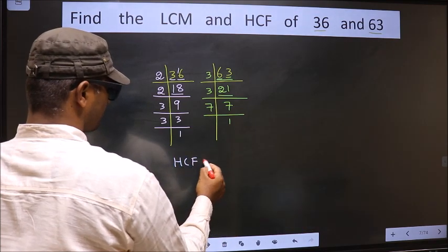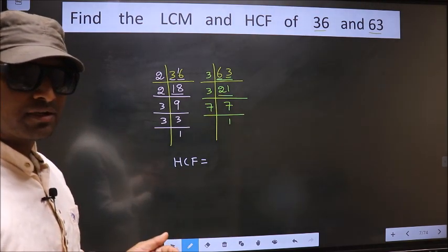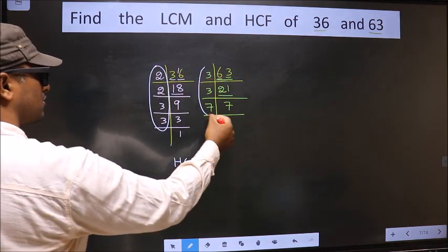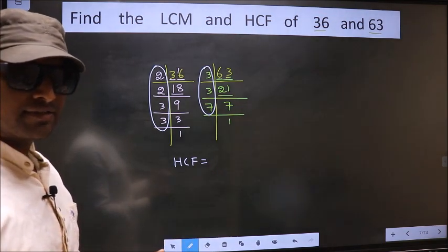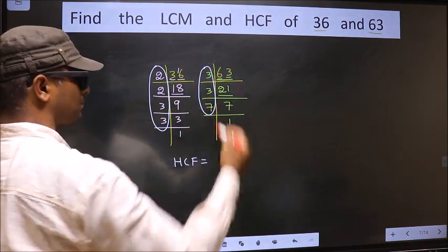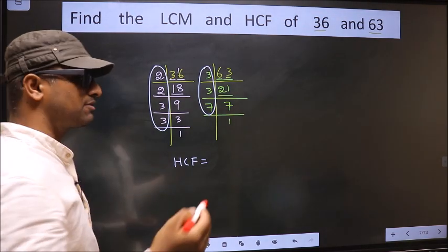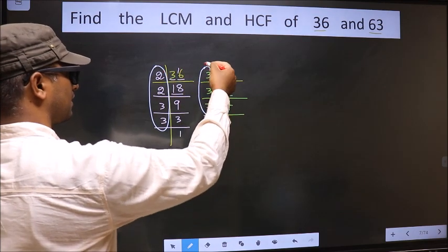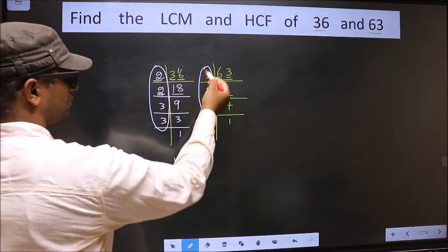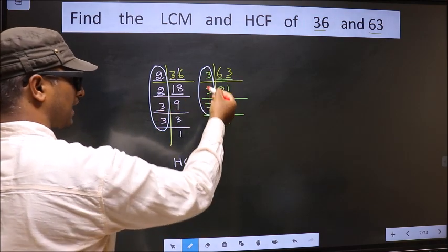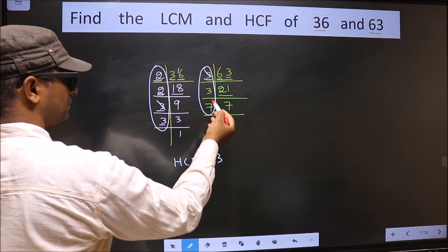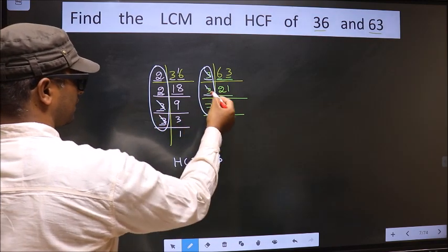Now our HCF is: HCF is the product of numbers which should be present in both factorizations — here and here. So now let us find the numbers which are present in both. Starting with the number 2 — do we have 2 here? No. Next number 2 — do we have 2 here? No. Next number 3 — do we have 3 here? Yes. So we take 3. Next number 3 — do we have 3 here? Yes. So we take 3.